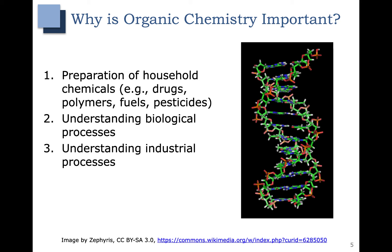If you open up your medicine cabinet, a lot of those medicines were probably made by an organic chemist. There are also a lot of polymers you use day-to-day that are probably organic based. Fuels and fuel additives, a lot of those are organic compounds. A lot of pesticides used in agriculture or in our backyards are organic too. Organic chemistry is also very important for understanding biological processes — for example, DNA is an organic compound, and if we understand organic chemistry, we can apply this to understanding how our body works and how certain things happen in our DNA.